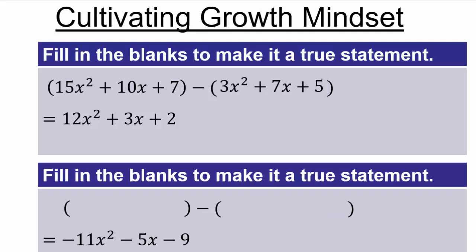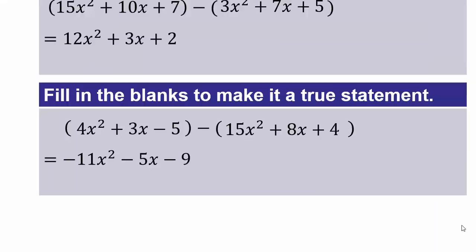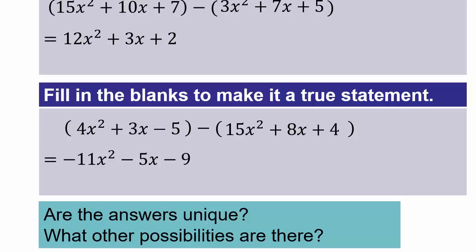Another example: if I use 4x² + 3x − 5, then 4 minus 15 gives −11x², 3 minus 8 gives −5x, and −5 minus 4 gives −9. There are infinitely many possible choices. In the first problem the blank is unique; in the second, since both blanks are open, infinitely many possibilities exist. See if you can come up with a couple more on your own.